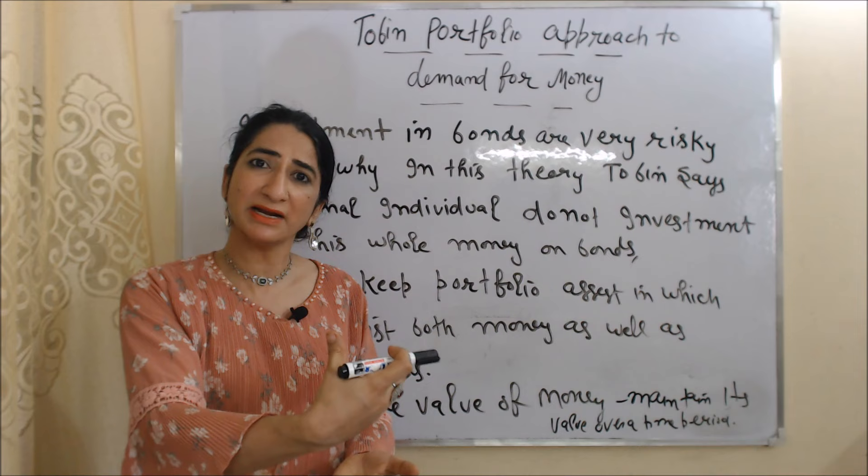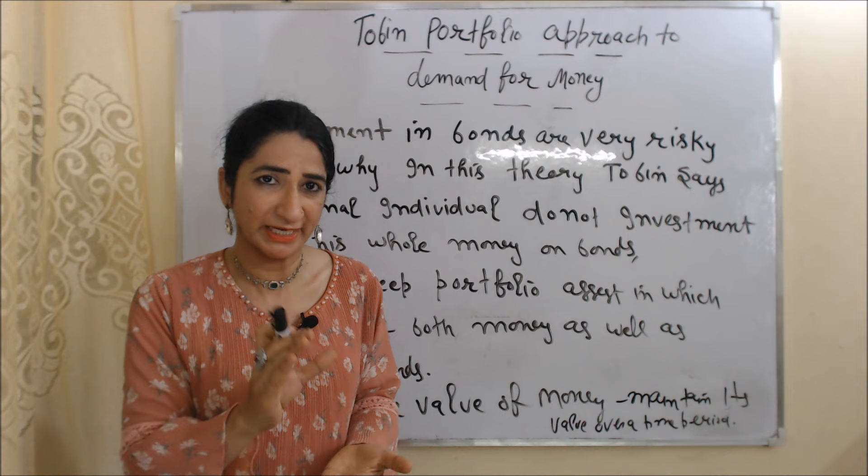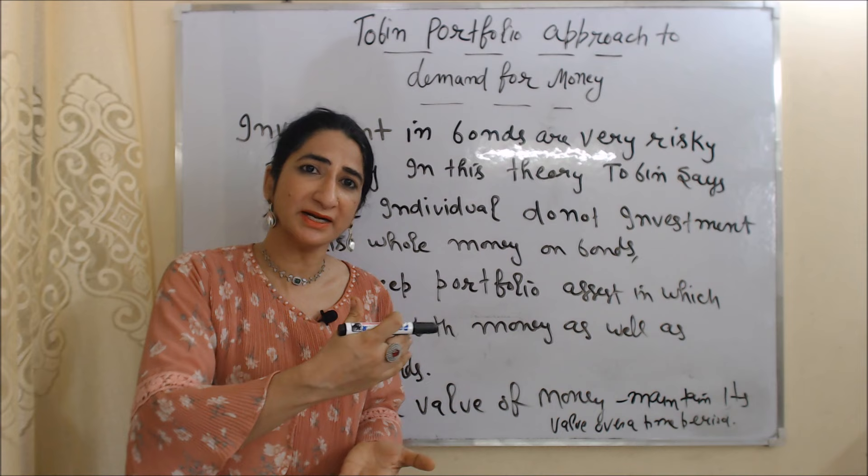Second thing in this theory: Tobin emphasizes the store value of money. As we know, money maintains its value over a time period — we can store it and spend it later.